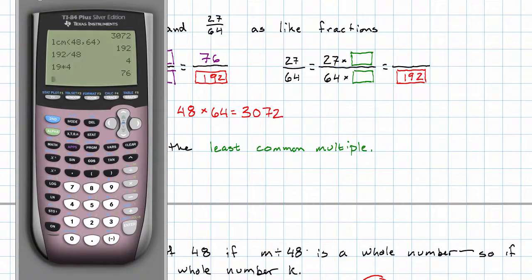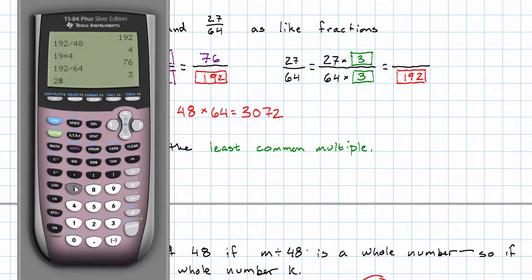For the other fraction, what did we need to multiply 64 by to get 192? That was a 3. So we need to multiply the numerator by 3. And we'll get 81.